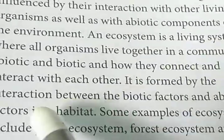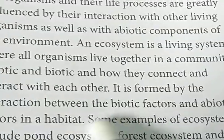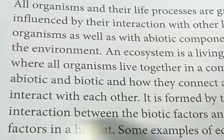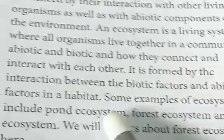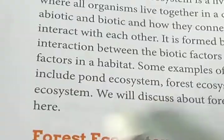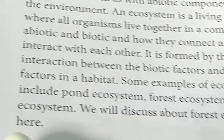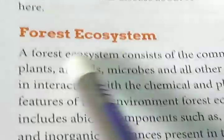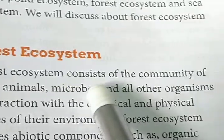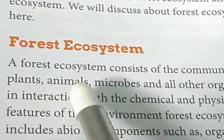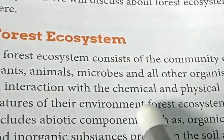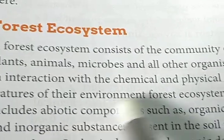Because it is a living system, if species cannot habituate in a particular habitat, they are not able to interact with each other. Some examples of ecosystems include pond ecosystem, forest ecosystem, and sea ecosystem. We will discuss the forest ecosystem here. A forest ecosystem consists of the community of plants, animals, microbes, and all other organisms in interaction with the chemical and physical features of their environment.